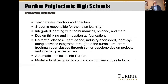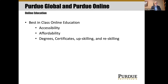We also created Polytechnic High Schools — reinventing high school at the K-through-12 level. Teachers are mentors and coaches, and students are responsible for their own learning. We've integrated learning with the humanities, science, and math. Design, thinking, and innovation are foundations. There are no formal classes in these high schools — everything is team-based, industry-sponsored, learn by doing. Students that do well get automatic admission into Purdue, which is a big deal because it's very hard to get into Purdue University. And it's a model school being replicated across communities in the state of Indiana.